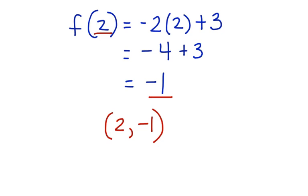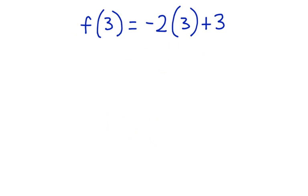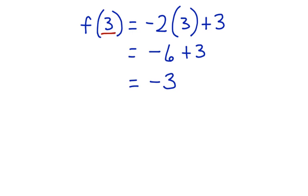Now let's look at finding the function of 3. Here we have that the function of 3 is equal to negative 2 times 3 plus 3. When we evaluate this, we have negative 6 plus 3, and finally we end up with the output of negative 3. Again, we have an x value and a y value. Our ordered pair is (3, negative 3).